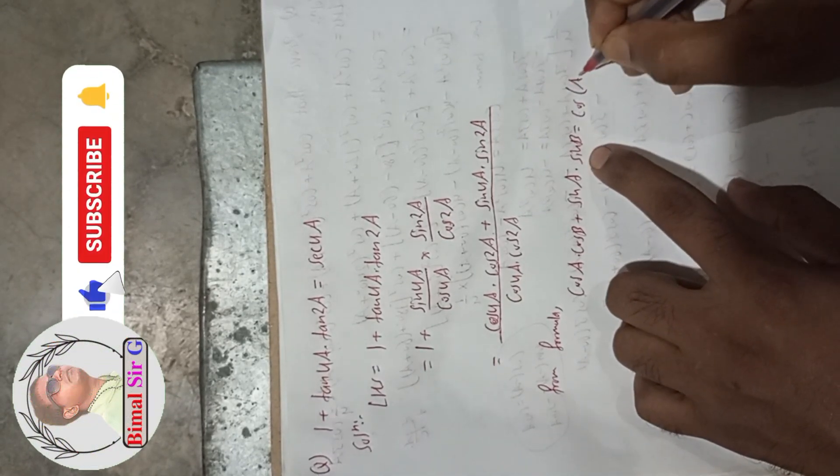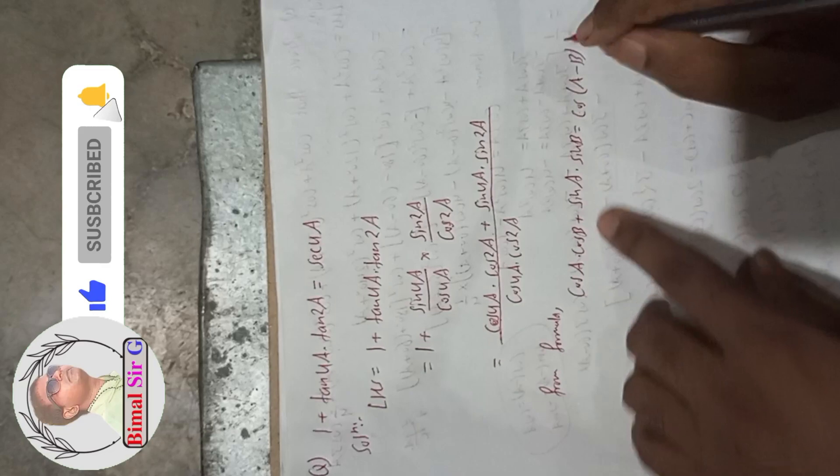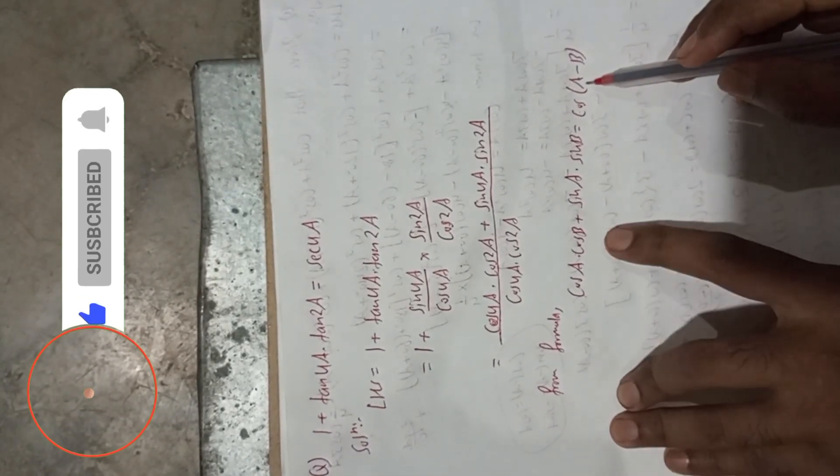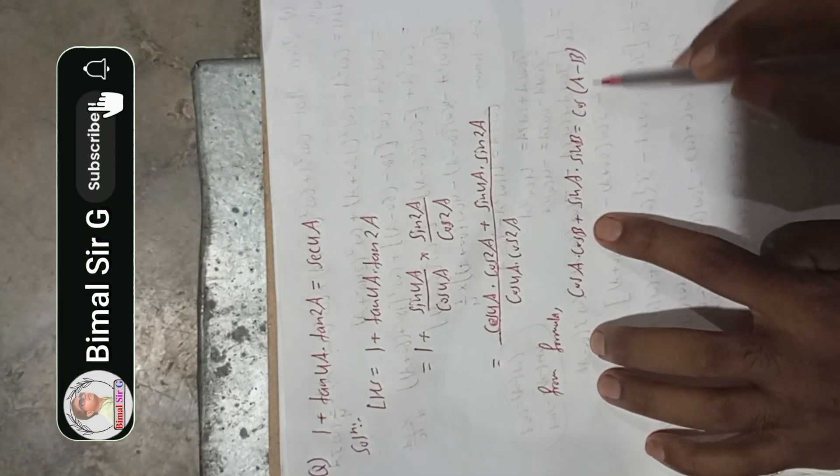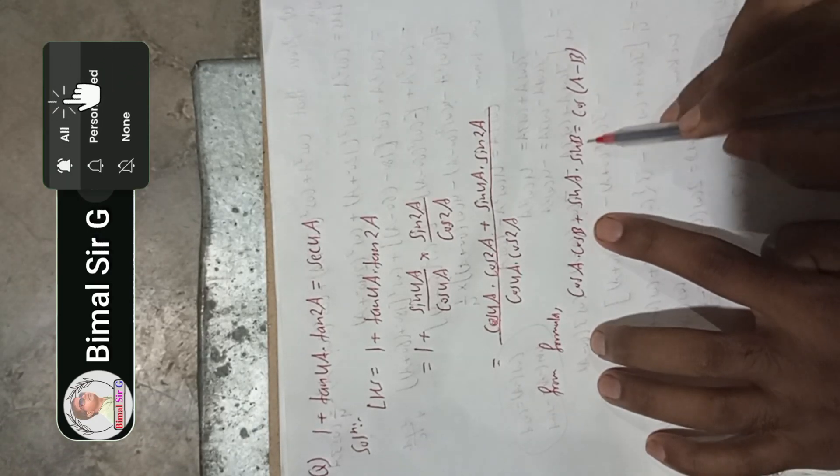This is the formula: if we have cos(a - b), then there will be cos(a)cos(b), and for minus there will be plus, then sin(a)sin(b).